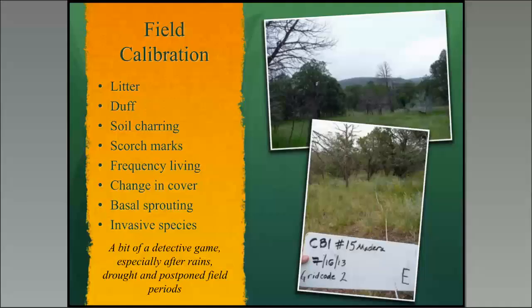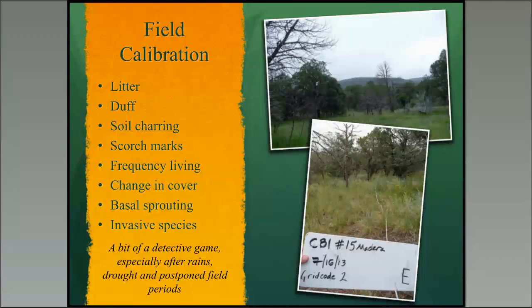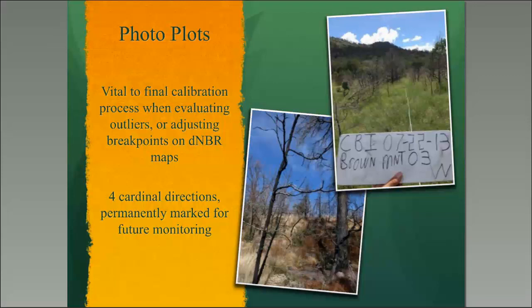For field calibration, some of the things you're going to be addressing are the amount of litter, duff, soil charring patterns, scorch marks, frequency of certain living plant types, change in cover, basal sprouting, and invasive species. It is a detective game, especially after rain. We had drought and postponed field periods that confused things, but I was pretty satisfied with how things came out. Pay attention to areas with dead trees but well-recovering grass communities underneath — that had a lot of play with our results. Photoplots are vital for your final calibration process; we take north, south, east, and west shots, and you can load those on a website for others to view as well. We permanently mark the plots.